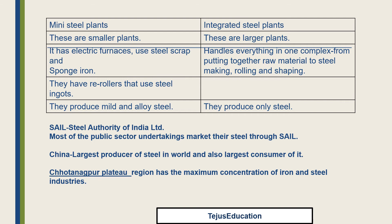Steel Authority of India Limited (SAIL) — most public sector undertakings market their steel through SAIL. The largest producer and consumer of steel in the world is China.